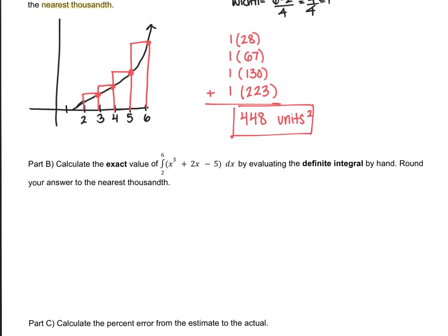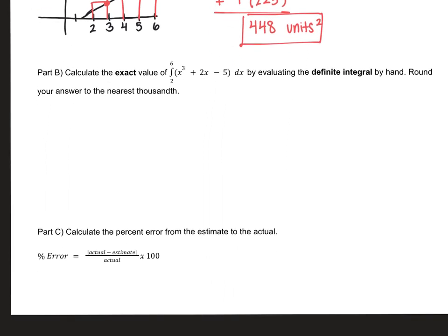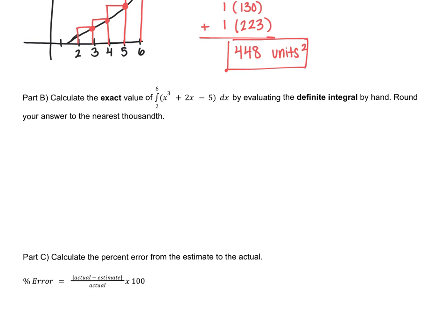Okay, so now something new. Part B, I want to calculate the exact value of this area under the curve by evaluating the definite integral by hand. So we already know how to take an antiderivative. So what we can do now is just show you one last step of how to get an answer. So let's just write it properly and learn the steps. So we have between 2 and 6 of x to the 3rd plus 2x minus 5 dx.